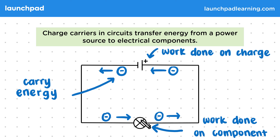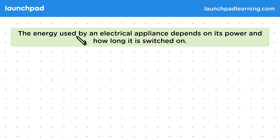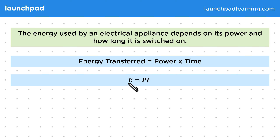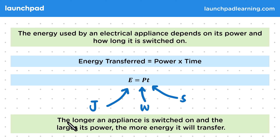What determines how much energy gets transferred to the component? The energy used by an electrical appliance depends on its power and how long it's switched on. As an equation, that is: energy transferred equals power multiplied by time, or E = P × T. Energy is measured in joules, power in watts, and time in seconds. The longer an appliance is switched on and the larger its power, the more energy it will transfer.